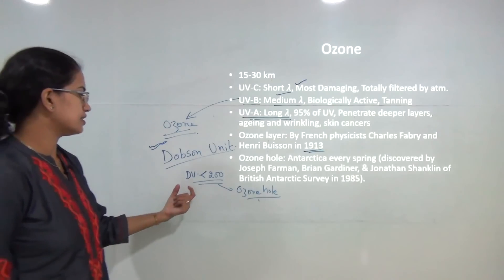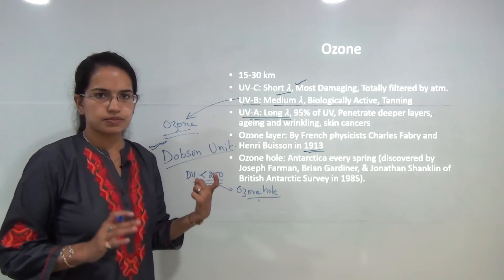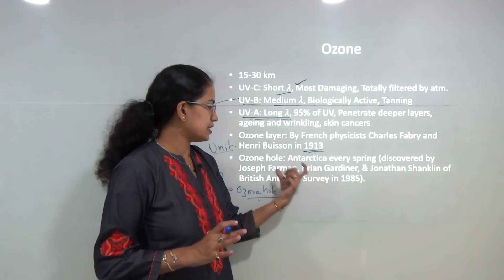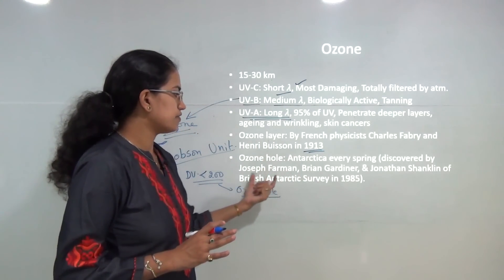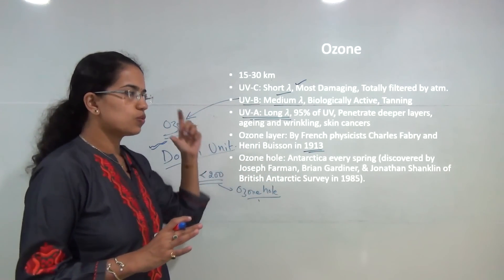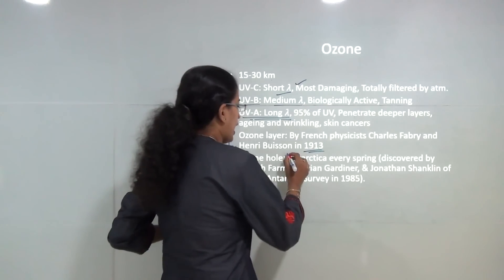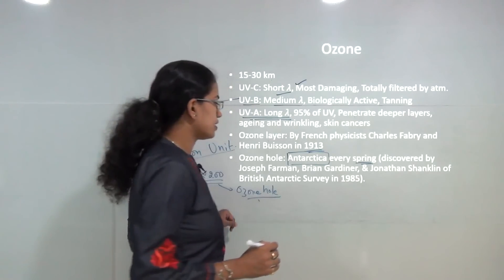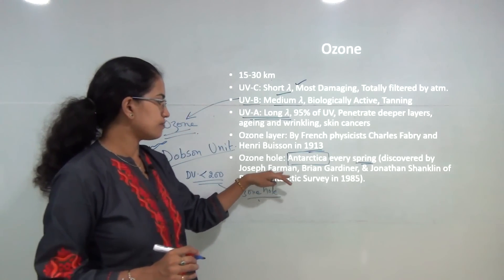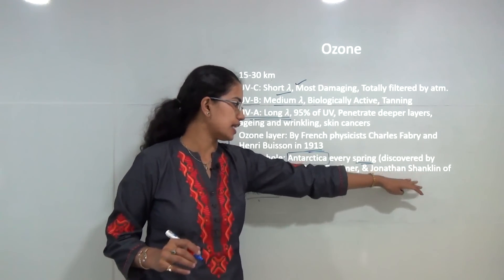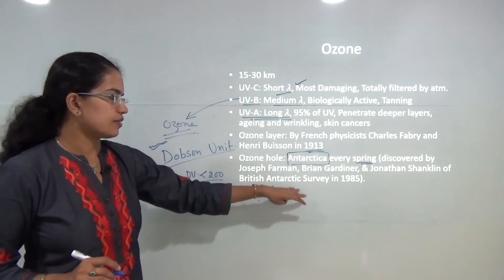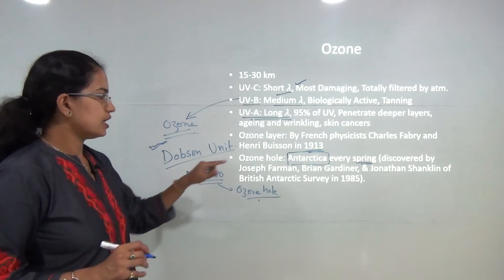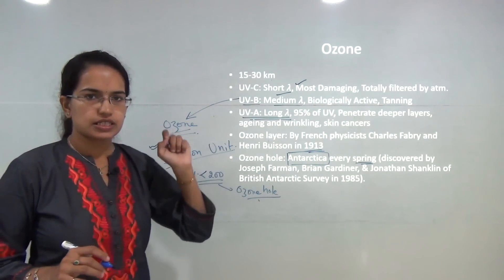In recent years, there has been discovery of an ozone hole towards Antarctica, mainly prominent in the spring. This was discovered by British scientists John Farman, Gardiner, and Shanklin under a survey conducted in 1985.